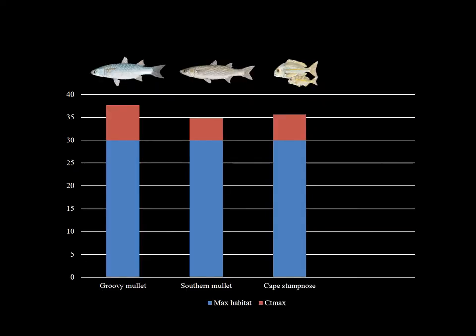PhD student Kerri-Ann looked at the CT max — the maximum temperature that these fish were able to tolerate — for some of our more warm-temperate species. In this figure, the red shows the CT max or maximum temperature tolerance, and the blue shows the maximum habitat temperature recorded in the estuary where she caught her fish. This was shown for groovy mullet, southern mullet and Cape stumpnose, which are three of your more common marine species found in our estuaries. They were all able to tolerate temperatures above 35 degrees, and the maximum temperature recorded in the estuary was 30 degrees — so they can tolerate temperatures 5 degrees above the maximum recorded.